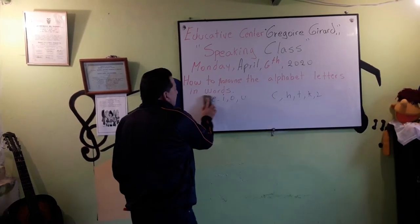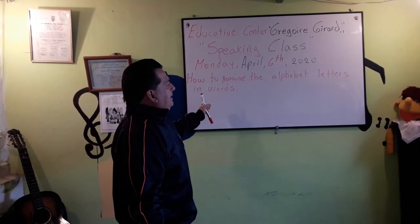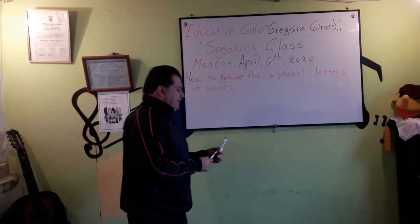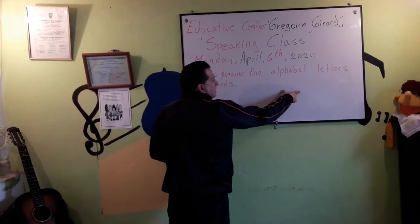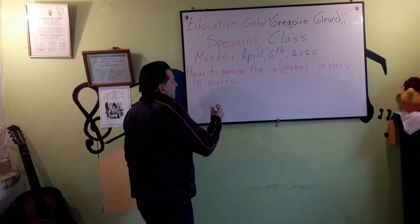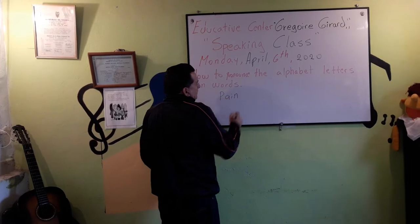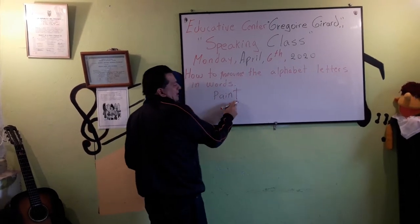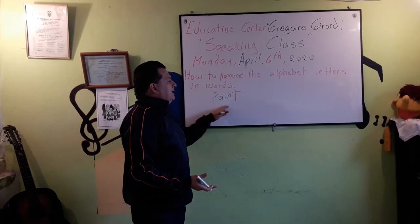Now, today's class is about how we can pronounce correctly the letters in words. For example, you have to be very careful when you pronounce the consonants. Imagine that you have the T — for example, the word "paint." Over here you have the T at the end, so you have to pronounce the T. Paint.